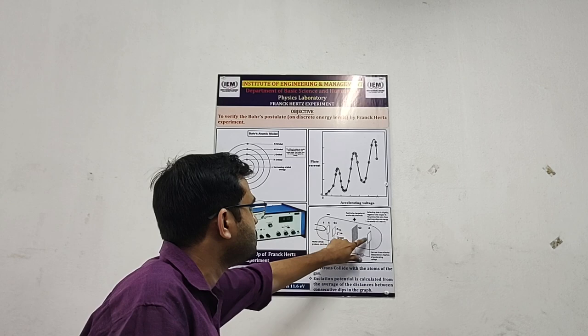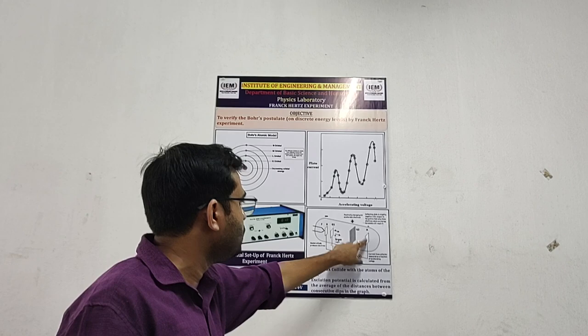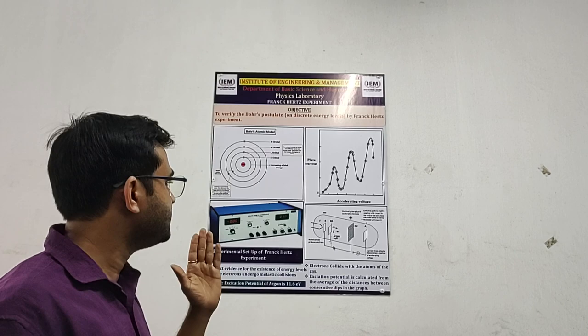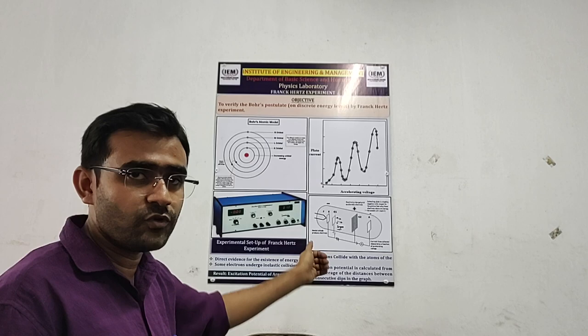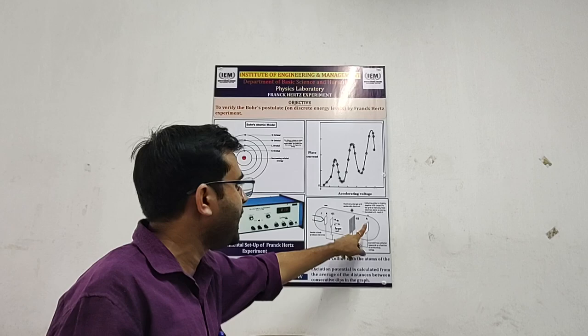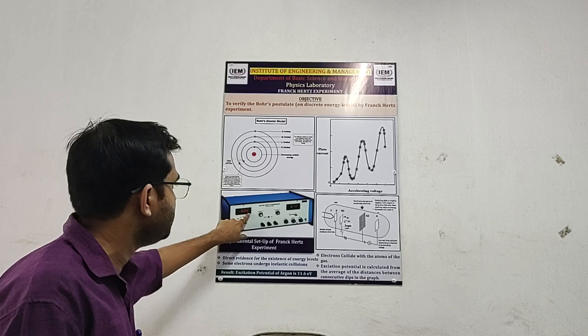Now, within the cathode and anode, you can see two other grids are there. Basically, their plates having some voltage. We will be providing the voltage. Now, if the electrons are moving from cathode to anode, there will be a current flowing through the circuit and we will find the corresponding current over here.